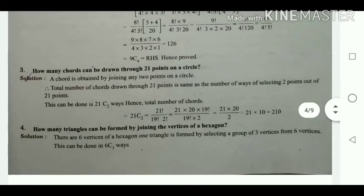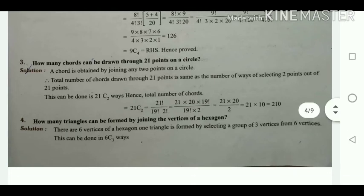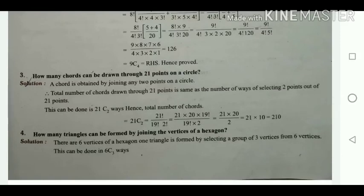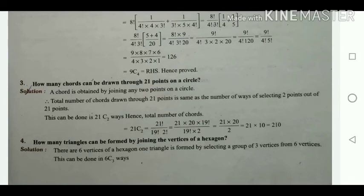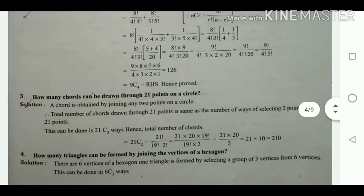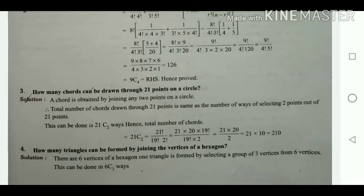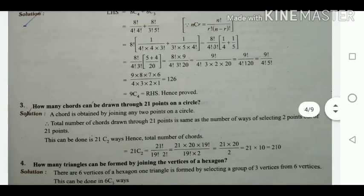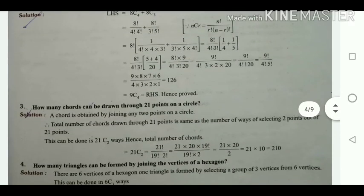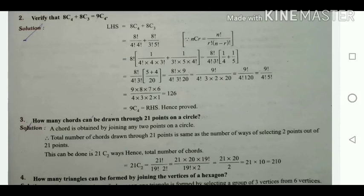8! × 9 equals 9!. So we have 9! / (4! × 3! × 20). Since 20 = 5 × 4 and simplifying, this becomes 9 × 8 × 7 × 6 / (4 × 3 × 2 × 1), which is 9C4. Therefore LHS = RHS = 126, and the result is proved.